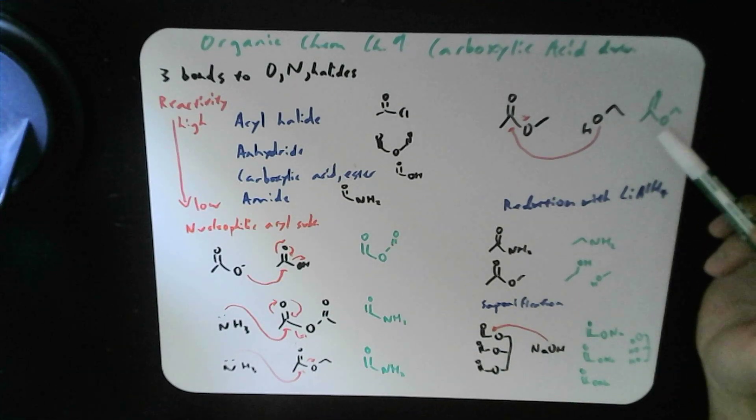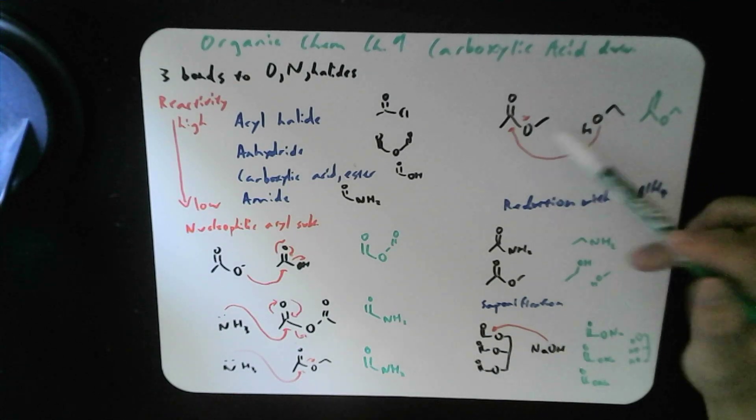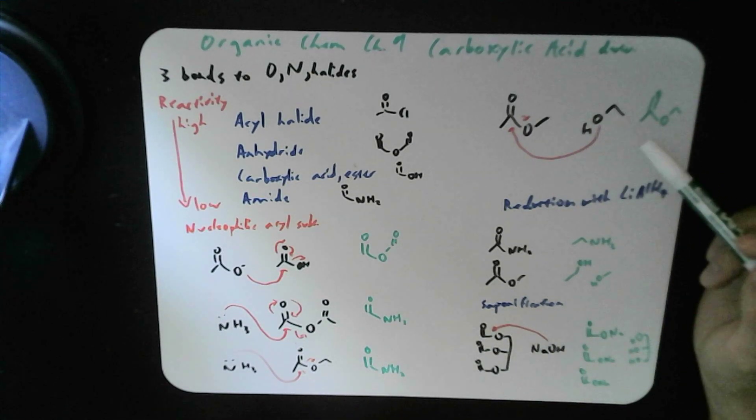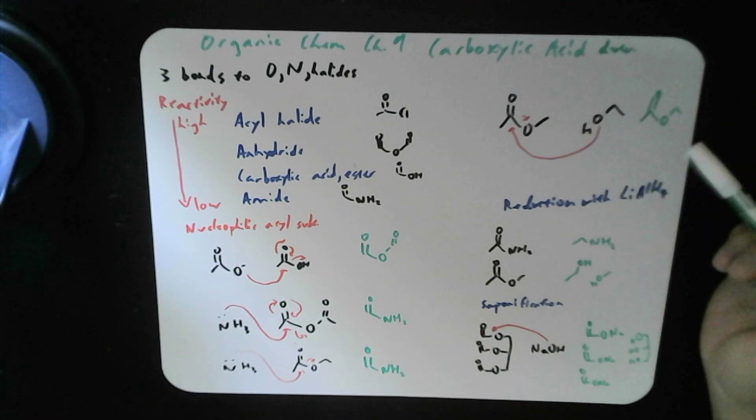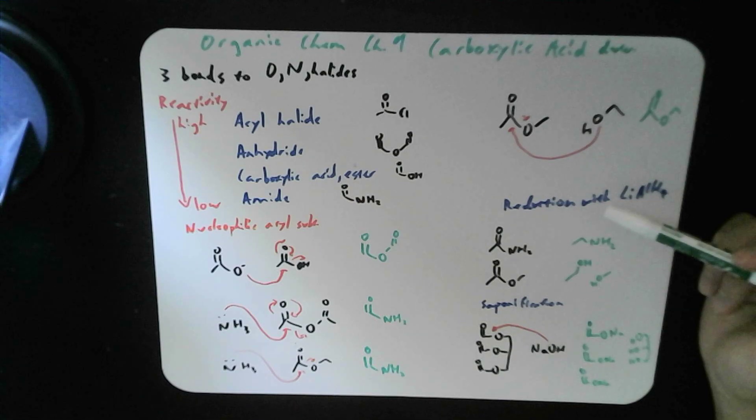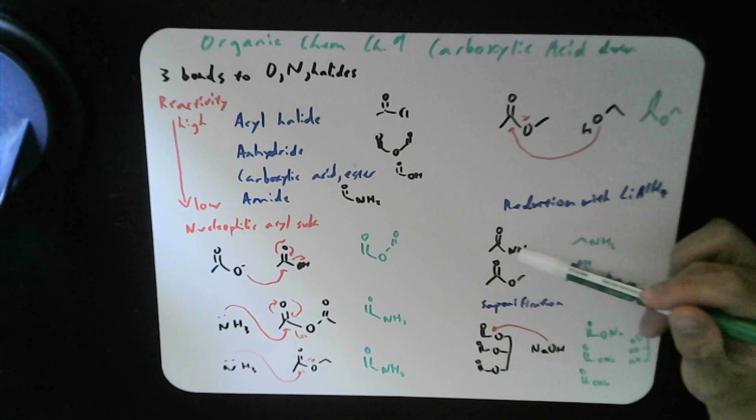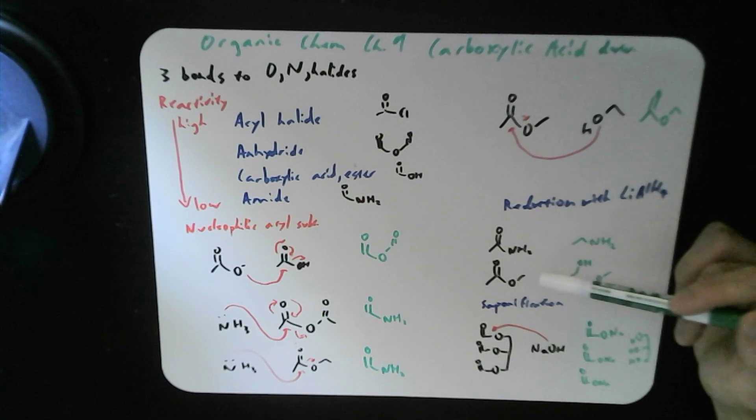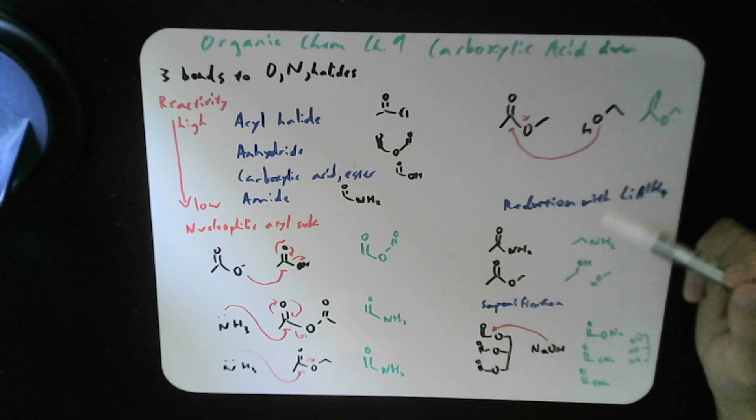An ester can form using another alcohol and just attacking the central carbon group and causing the formation of an ester. And a reduction can happen for either amide or ester into simpler forms.